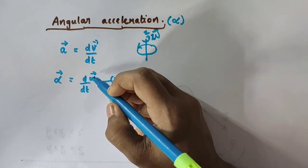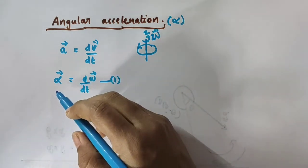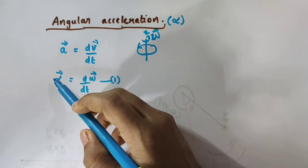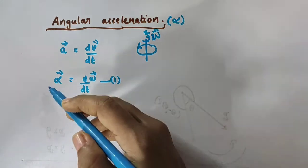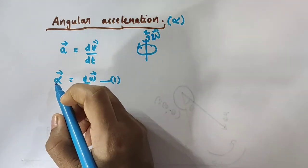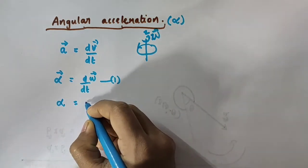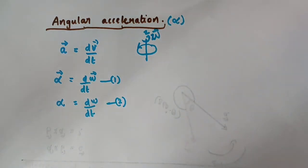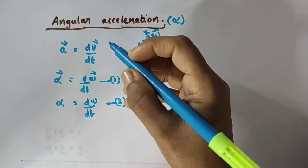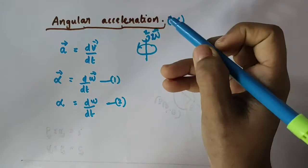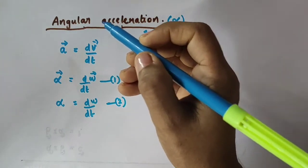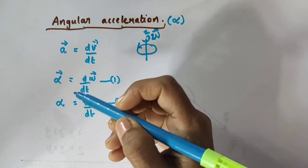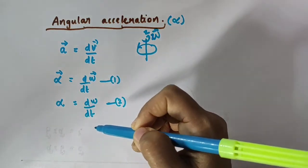If vector omega is fixed — its direction is fixed and magnitude is fixed — then vector alpha is also fixed. Vector alpha being fixed means this is a vector equation. If vector alpha is fixed, then this equation reduces to the scalar form: alpha is equal to d(omega) by dt. I am taking this as equation number 2. So, in this video we have discussed about angular acceleration. It is represented by alpha. Angular acceleration is the rotational analog of linear acceleration and it is defined as: vector alpha is equal to d(vector omega) by dt, or in scalar form, its magnitude alpha is equal to d(omega) by dt.